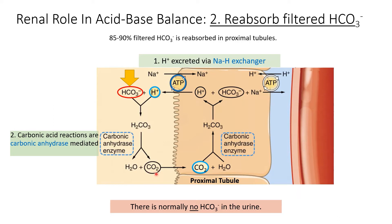This leads to the return of CO2 into the proximal tubules and generation of bicarbonate again. Eventually, this bicarbonate is returned to the bloodstream. There is normally no bicarbonate in the urine, and this is an important point to note.